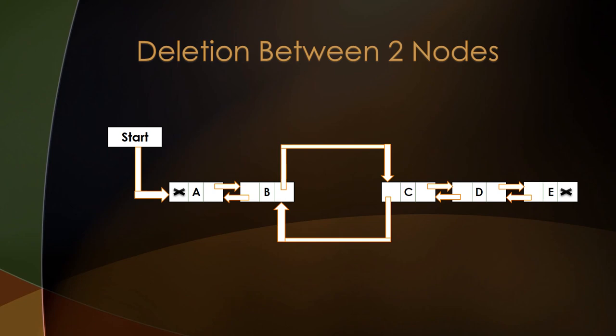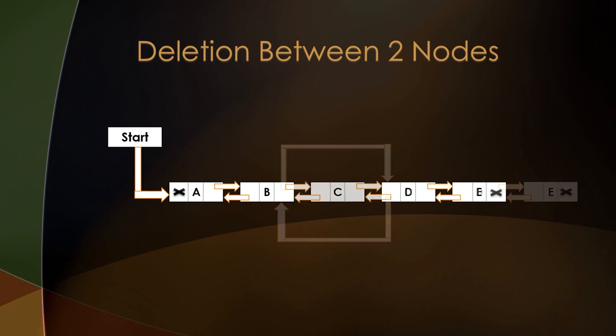Regarding how the node is actually deleted: if you are using an object-oriented programming language such as Java, it will automatically delete the node during garbage collection. However, if you are using a language such as C, which is a procedure-oriented language, you will need to delete the node manually. Nodes B and C now point properly to each other.